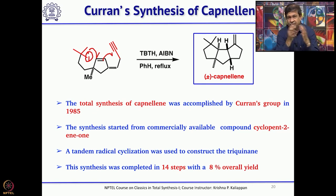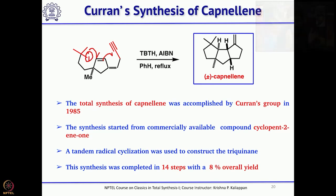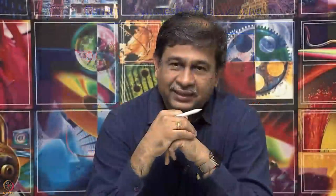Using the same tandem radical cyclization, Curran's group successfully achieved the total synthesis of capnellene starting from commercially available 2-cyclopentenone in 14 steps with an overall yield of approximately 8%. We will continue our discussion on how radical cyclization has been successfully used in the synthesis of more triquinines in the next lecture.